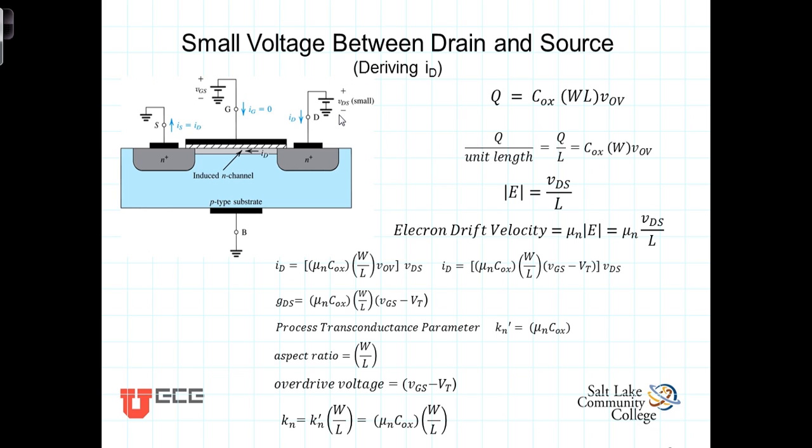Now with the VDS being small, we're going to assume that the channel is still uniformly shaped or uniform in depth, and that the gate voltage is uniformly applied across the length of the channel.